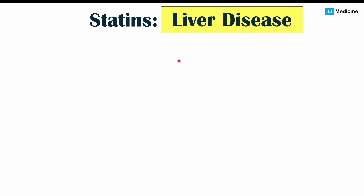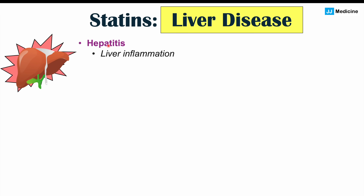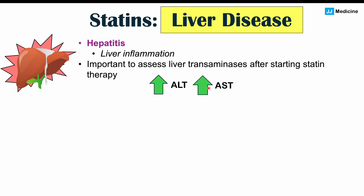The next health consequence that statins can cause is liver disease. We can get hepatitis with statin use. "Hepatitis" — "itis" refers to inflammation, "hepat" refers to the liver — so it's liver inflammation. What we're going to see is elevated liver transaminases: ALT and AST. These are enzymes that can be released from the liver when it's inflamed, and there will be increased ALT and increased AST.